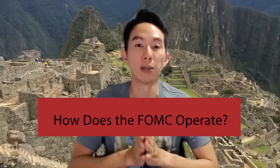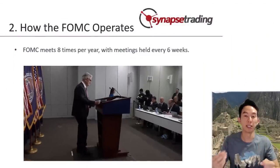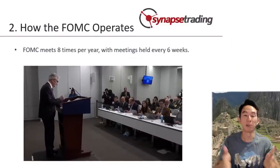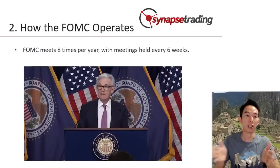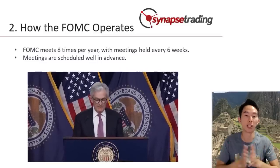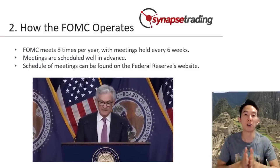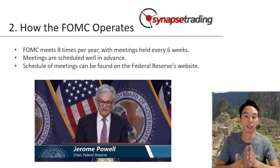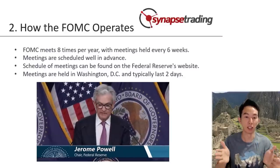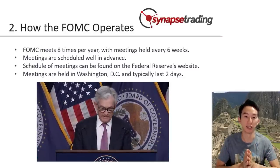How does the FOMC operate? The FOMC typically meets 8 times a year, with meetings held about every 6 weeks. Meetings are held on a schedule that is set well in advance, and the schedule can be found on the Federal Reserve's website. The meetings are always held in Washington DC and typically last about 2 days.